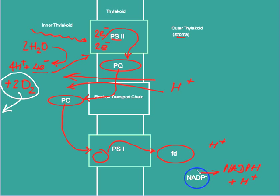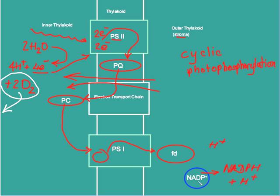In the absence of NADP+, which can sometimes occur, these electrons are channeled back through the transfer system, giving an example of cyclic photophosphorylation. But most often NADP is present and the electrons are transferred to NADP, allowing for the formation of reduced NADP — NADPH. This is known as non-cyclic photophosphorylation, and it makes the first key product of the light-dependent reaction: NADPH.